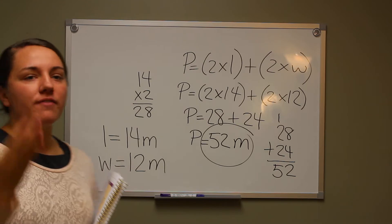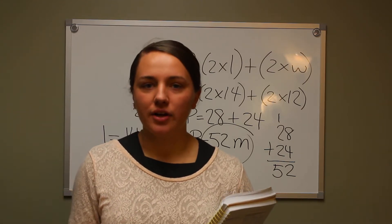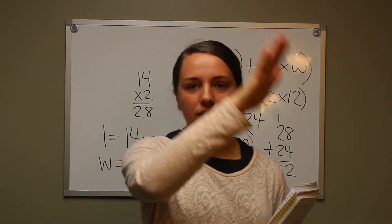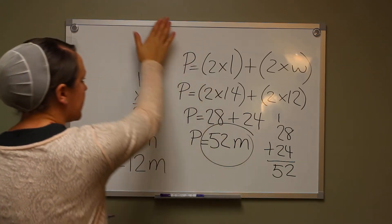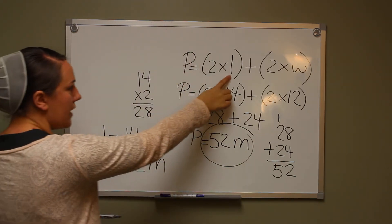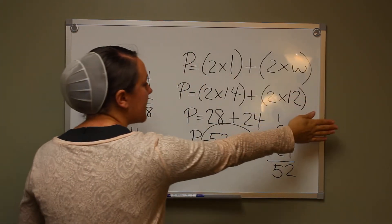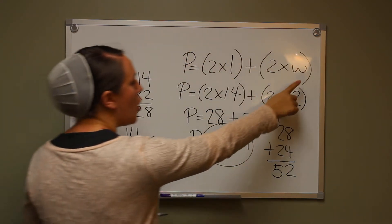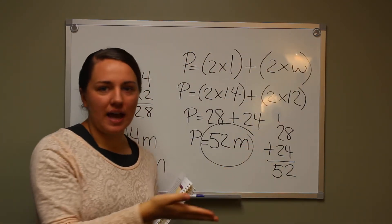Remember, when we're finding the perimeter of a rectangle, we're finding the length around the outside. Because these are the same, we take one of them and multiply it by two. Because these are the same, we take one of them and multiply it by two. Then we add them together.